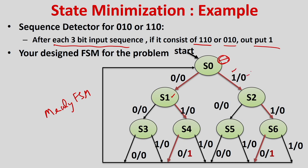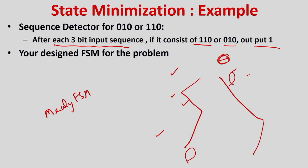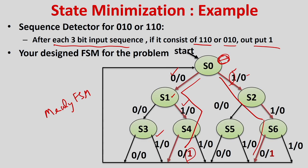If you get input 1 in state S0, you go to S2. The sequences being detected are '010' and '110'. For '010': you get 0, then 1, then 0 to get output 1. For '110': you get 1, 1, then 0. We are getting output 1 for these two cases.